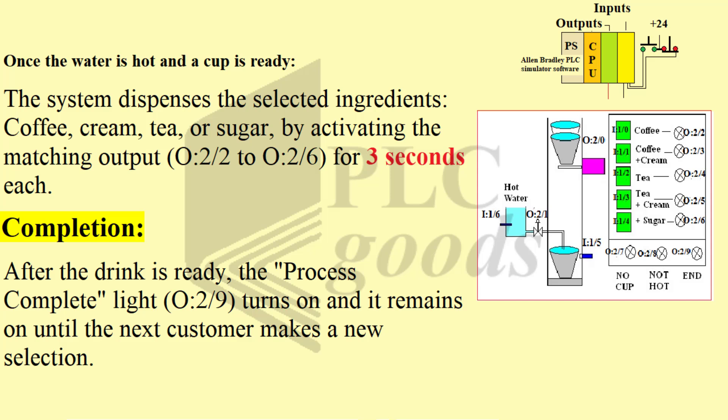Once the water is hot and a cup is ready, the system dispenses the selected ingredients — coffee, cream, tea, or sugar — by activating the matching output O2 to O6 for 3 seconds each.